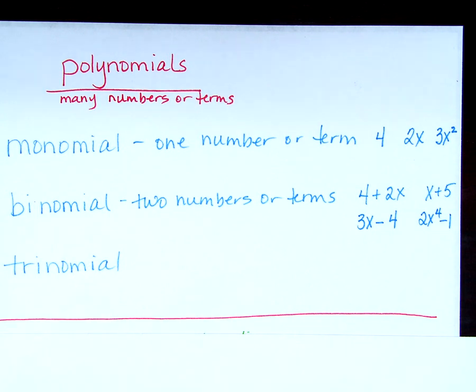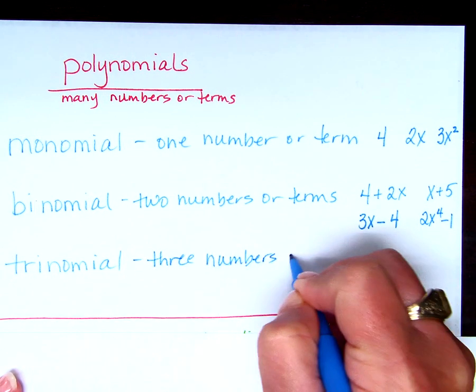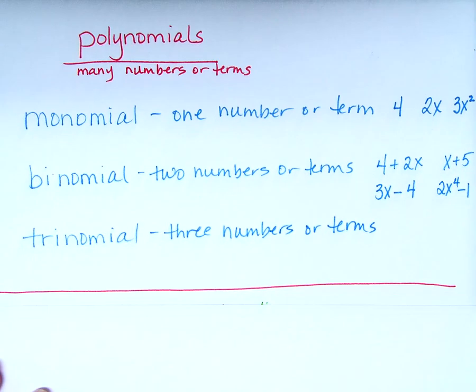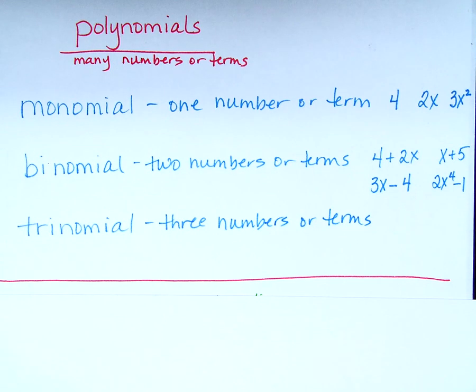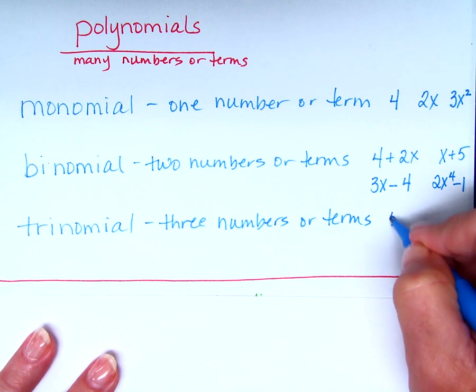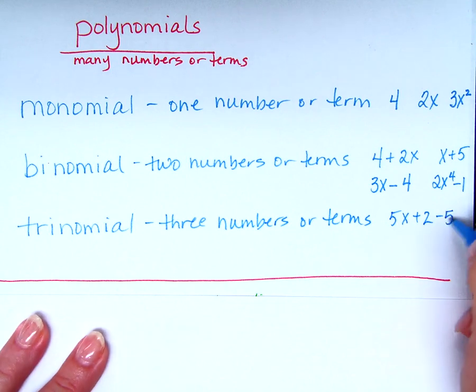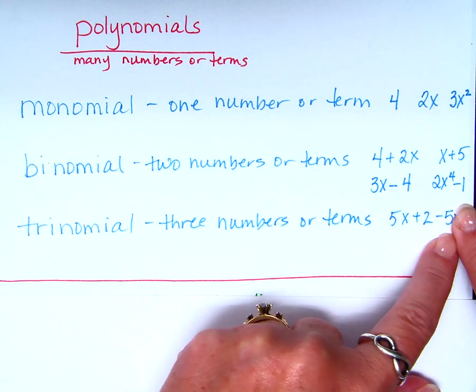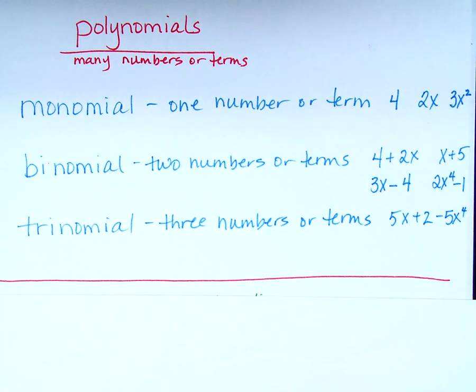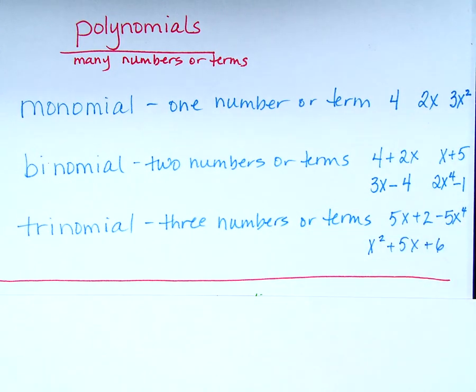So what about a trinomial? Three monomials. Give me an example. 5X plus 2 minus 5X to the fourth power. That would be a trinomial, right? Because if I just put 5, can't I combine these two terms and that would be a binomial? So they can't be like terms. X squared plus 5X plus 6 is also a trinomial.